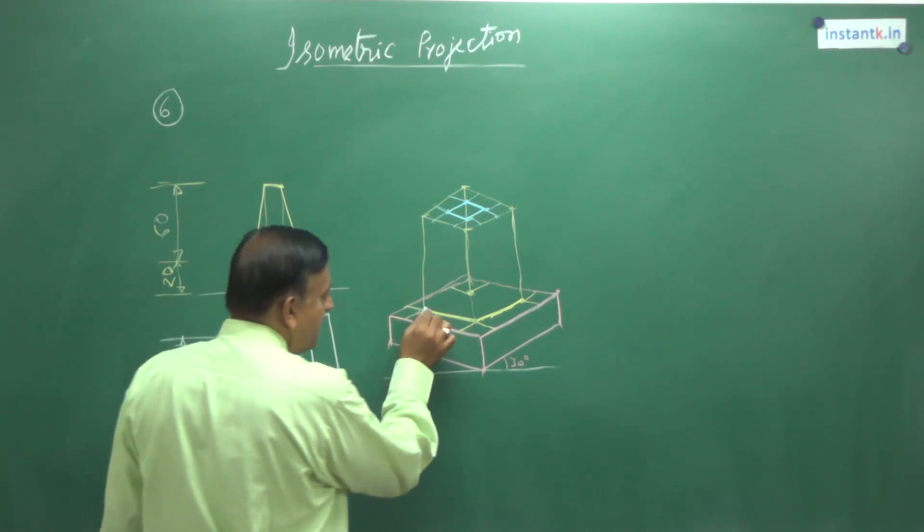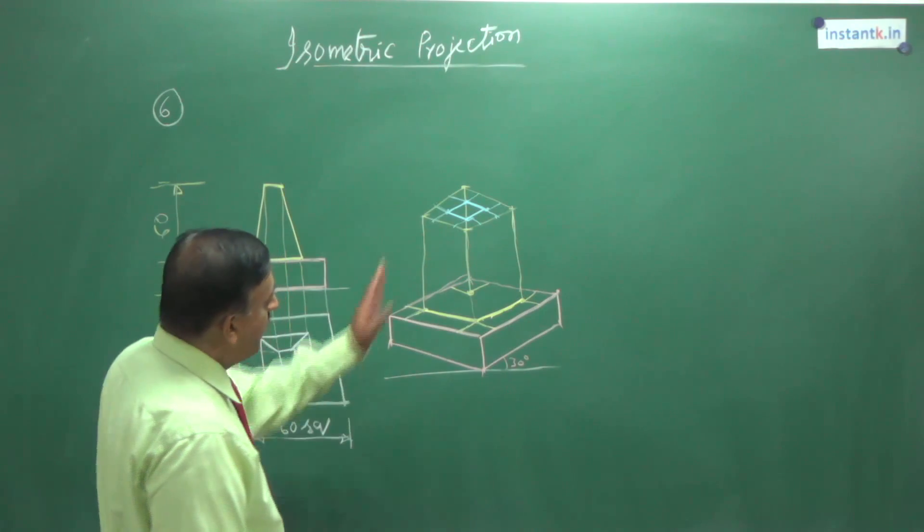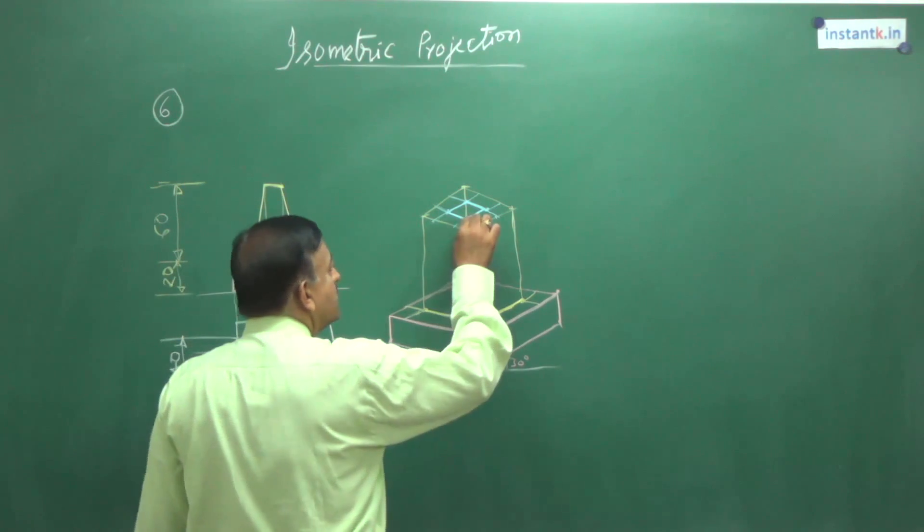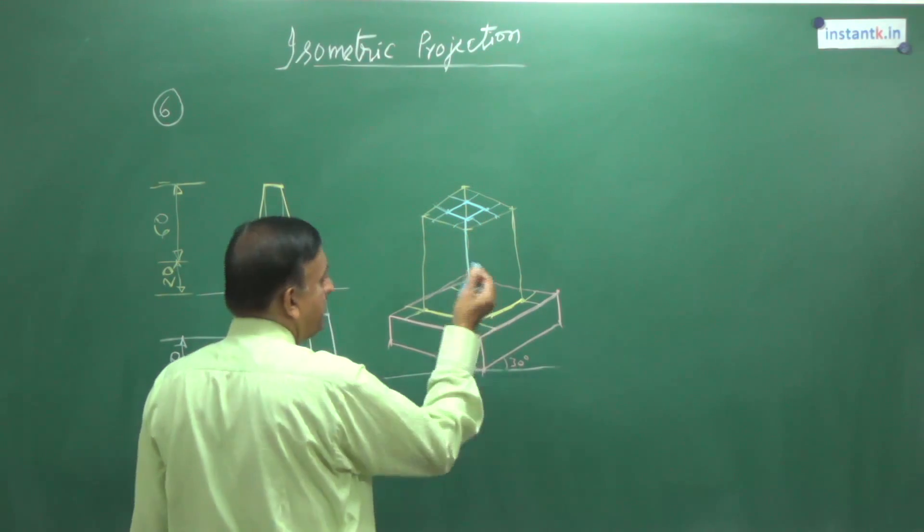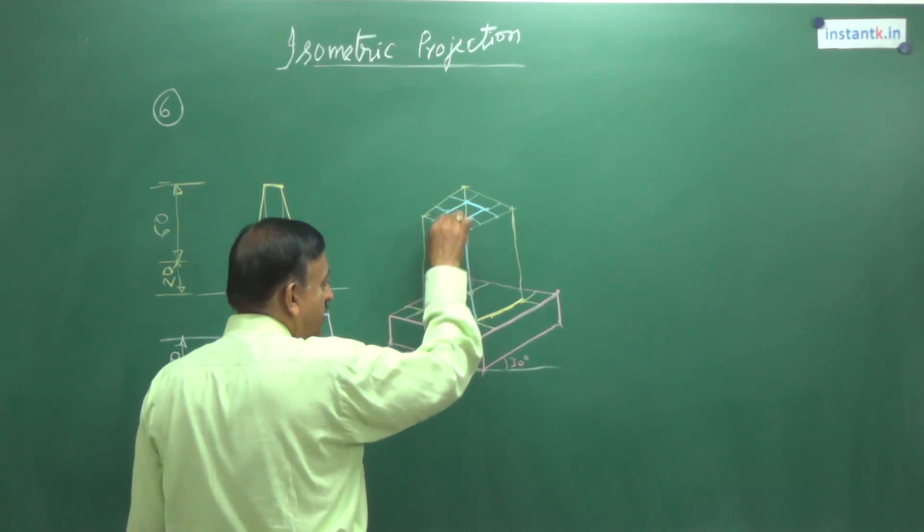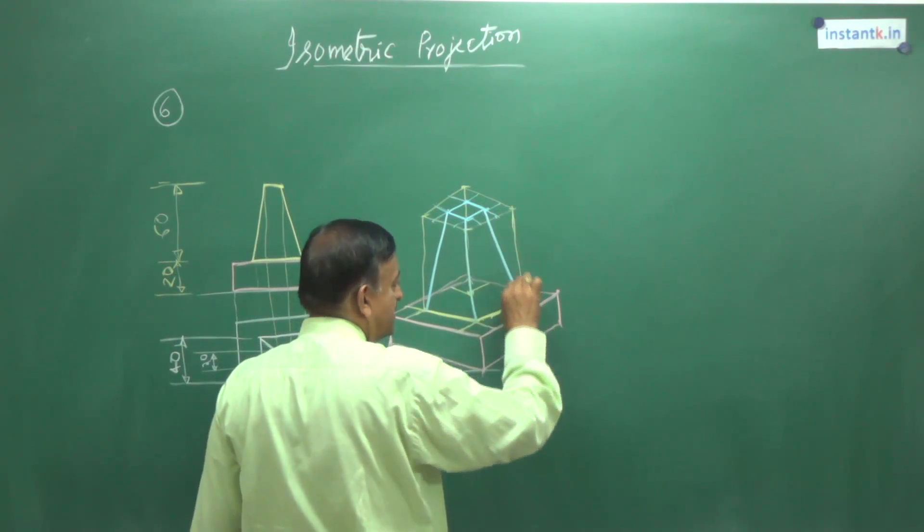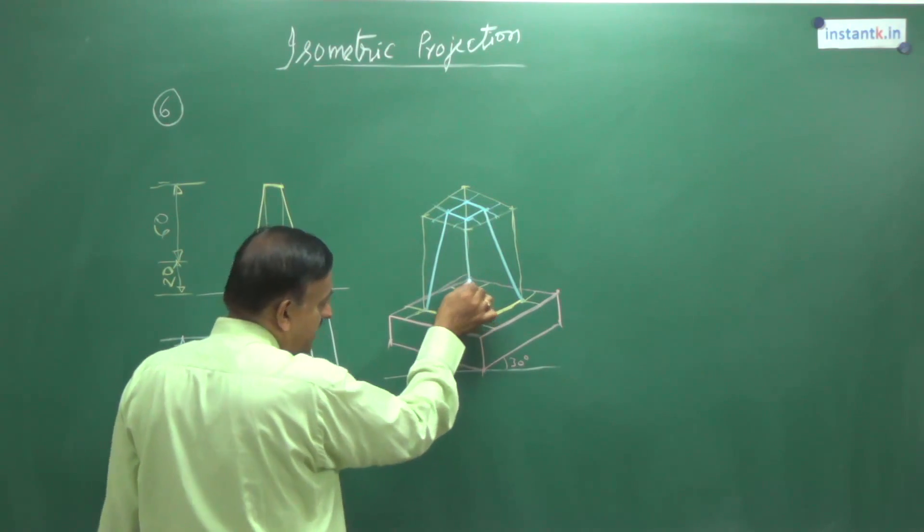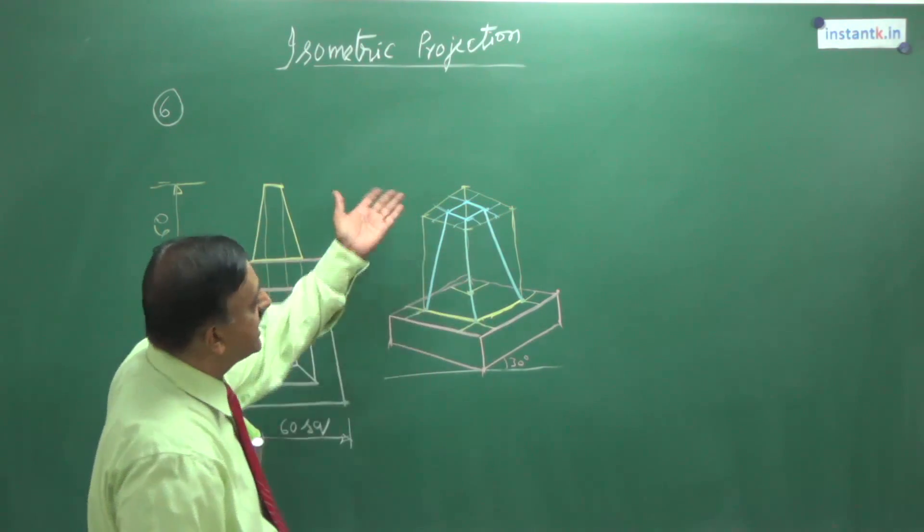Then, this 40 mm we have shown here, only this much. You have to join this top corner to the base corner. This top corner to this base corner. This top corner to this base. The backside one need not be shown because it is on the backside. It will not be visible.